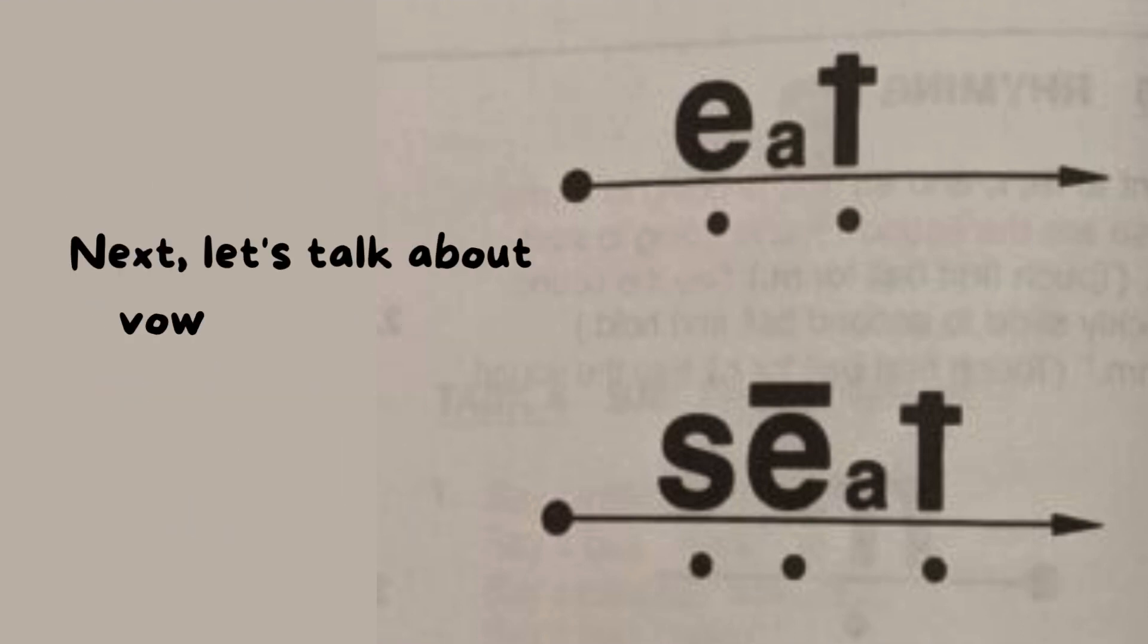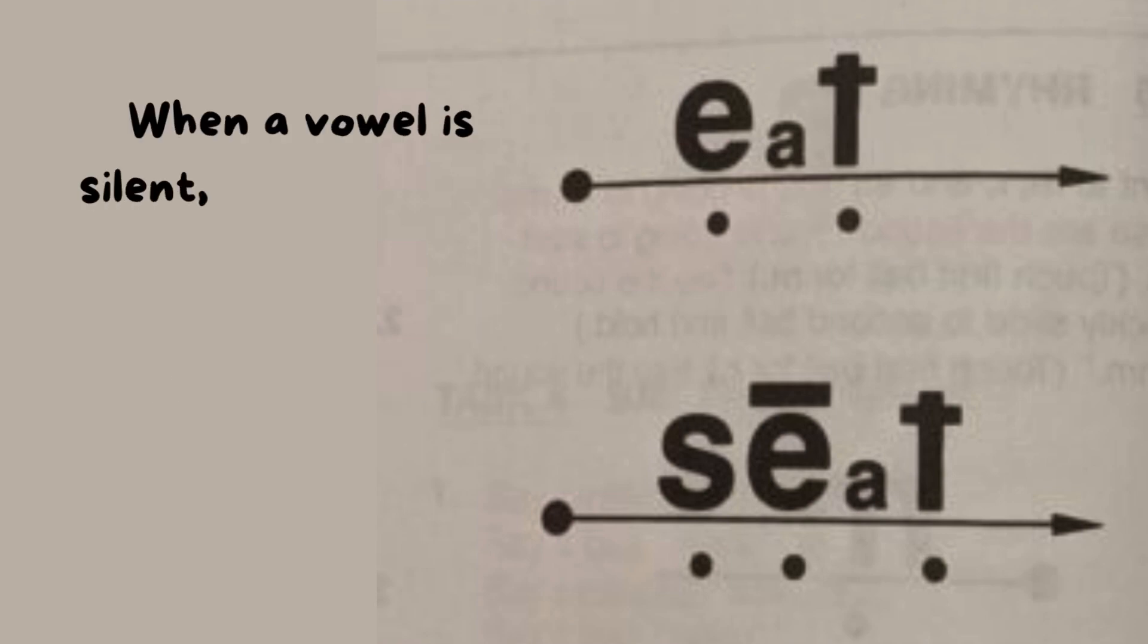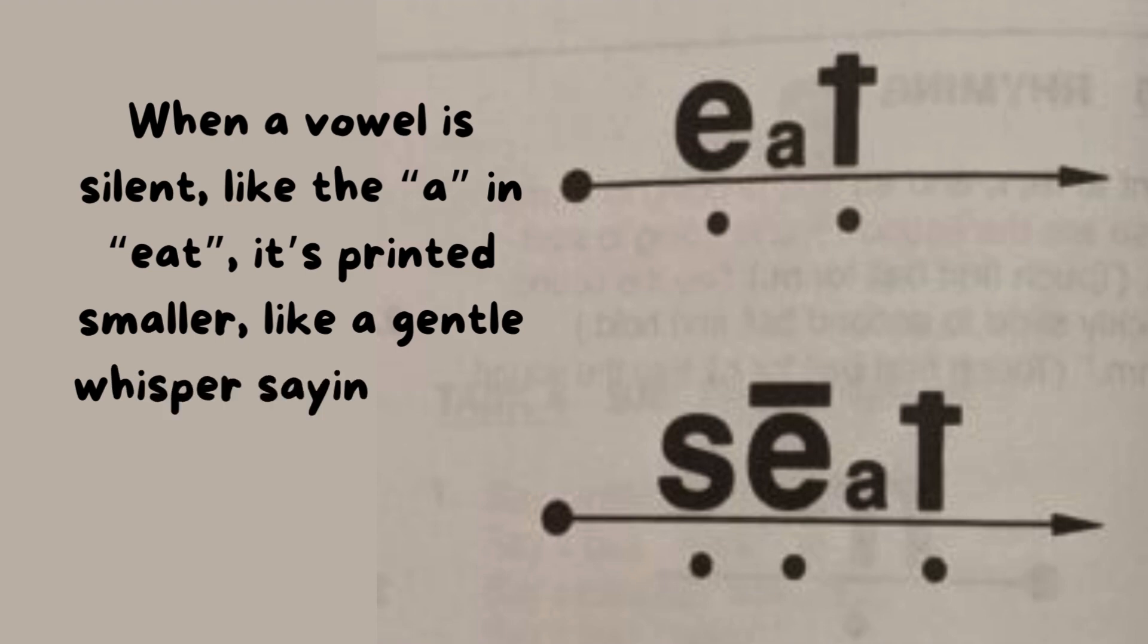Next, let's talk about vowel teams and silent letters. When a vowel is silent, like the A in EAT, it's printed smaller, like a gentle whisper saying, shh, I'm here, but don't say me out loud.